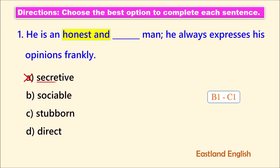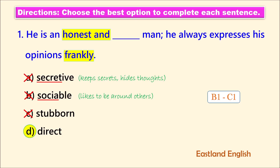We can cut A because a secretive person keeps secrets and hides thoughts. Stubborn is an adjective that doesn't work here as it isn't a positive adjective. Let's delete B because a sociable person likes to be around others. The last word in the sentence, frankly, can help us choose the word direct because frankly means in a direct manner. Number one should be: He is an honest and direct man. He always expresses his opinions frankly.